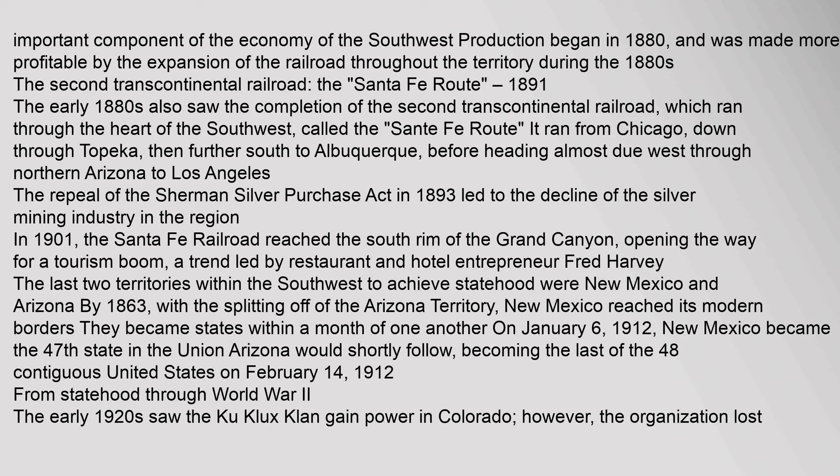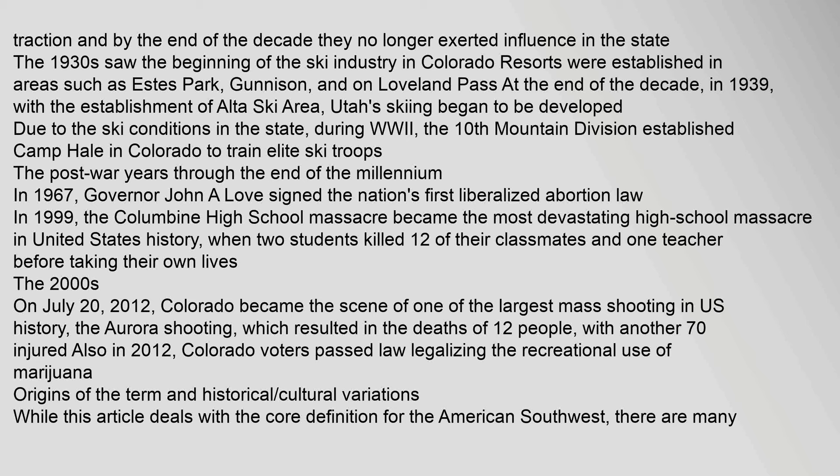The early 1920s saw the Ku Klux Klan gain power in Colorado; however, the organization lost traction and by the end of the decade they no longer exerted influence in the state. The 1930s saw the beginning of the ski industry in Colorado, with resorts established in areas such as Estes Park, Gunnison, and on Loveland Pass. In 1939, with the establishment of Alta ski area, Utah skiing began to be developed. During World War II, the 10th Mountain Division established Camp Hale in Colorado to train elite ski troops. In 1967, Governor John A. Love signed the nation's first liberalized abortion law. In 1999, the Columbine High School massacre became the most devastating high school massacre in United States history, when two students killed twelve of their classmates and one teacher before taking their own lives. On July 20, 2012, Colorado became the scene of one of the largest mass shootings in U.S. history — the Aurora shooting — which resulted in the deaths of 12 people, with another 70 injured. Also in 2012, Colorado voters passed a law legalizing the recreational use of marijuana.